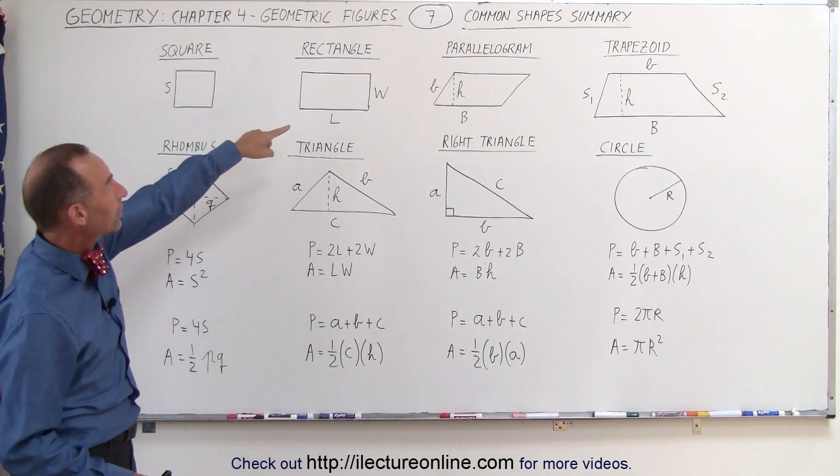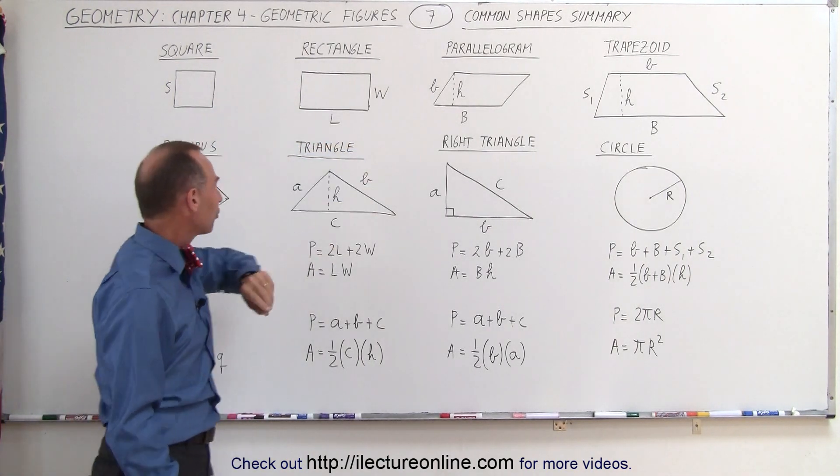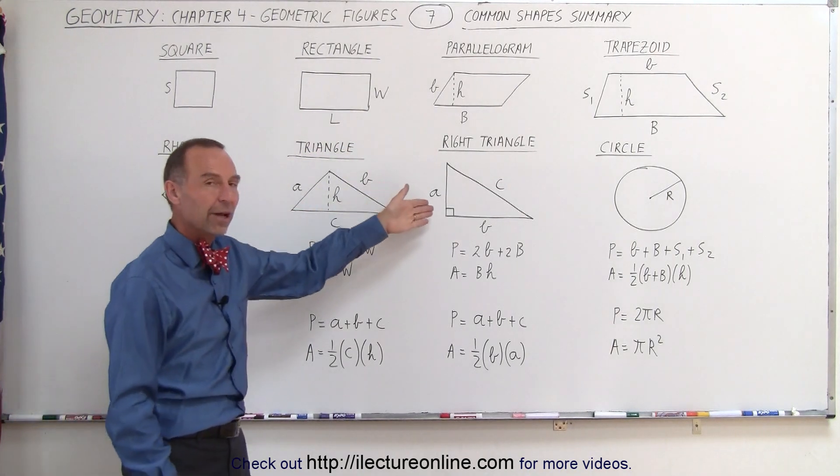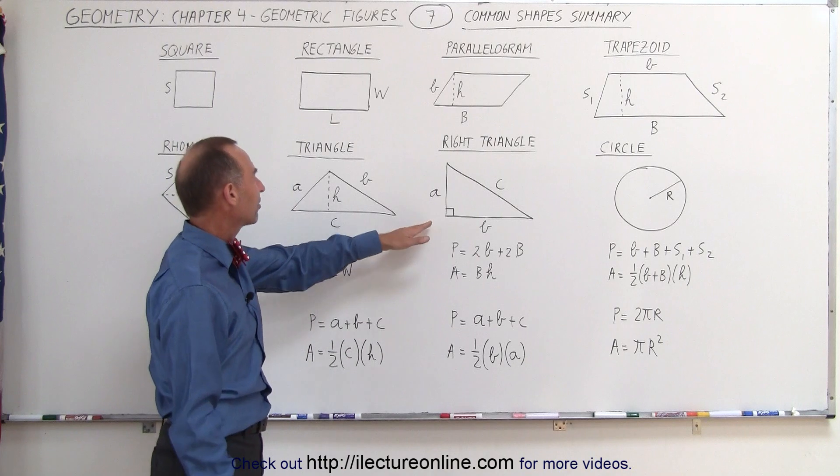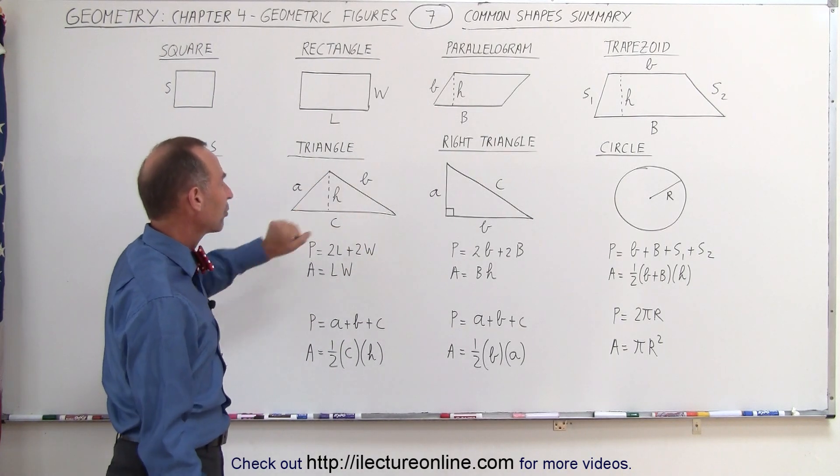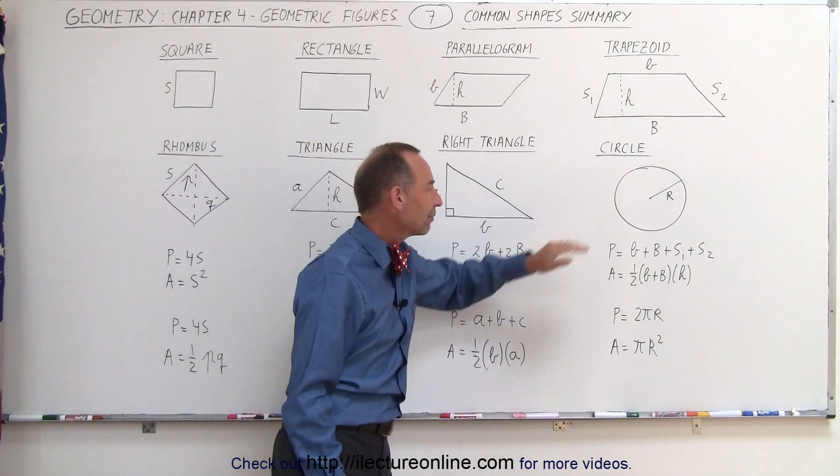We've seen the square, the rectangle, the parallelogram, the trapezoid, the rhombus, the triangle, and I threw in the right triangle to see how that stacks up with a triangle where the three sides are all different, and then we have the circle.